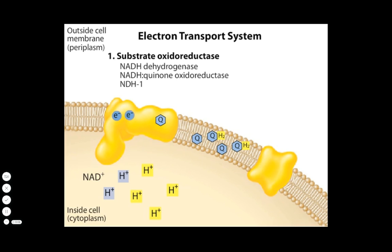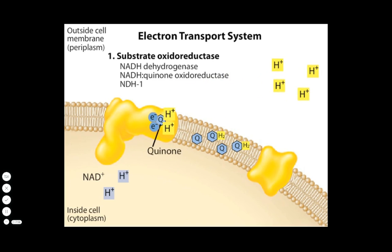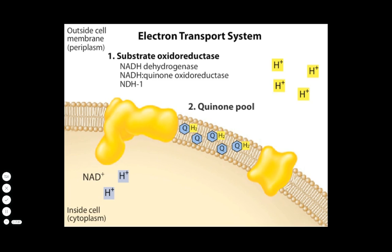The transfer of electrons releases energy that NDH1 can use to pump protons across the membrane. At the end of the chain, the electrons are transferred to a quinone, which picks up two protons from solution and is thus reduced to quinol. Quinones are generally designated Q and quinols are designated QH2. The quinols diffuse within the membrane and carry reduction energy to other electron transport system components.